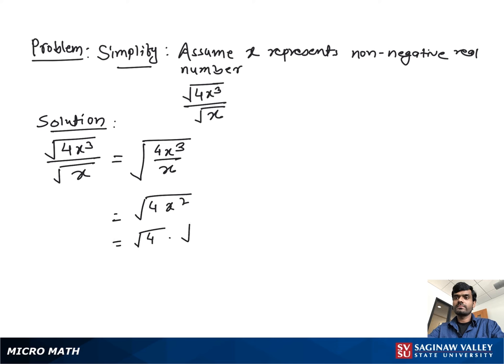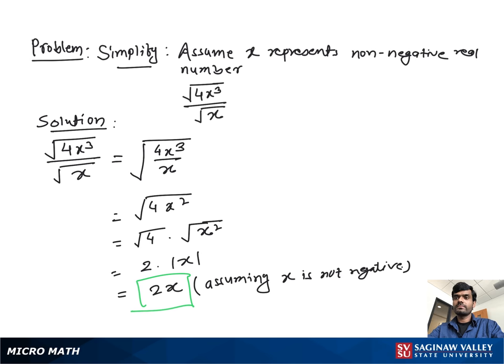We separate this as square root of 4 times square root of x squared. Square root of 4 is 2, and square root of x squared is the absolute value of x. So our final answer is 2x, assuming x is not negative.